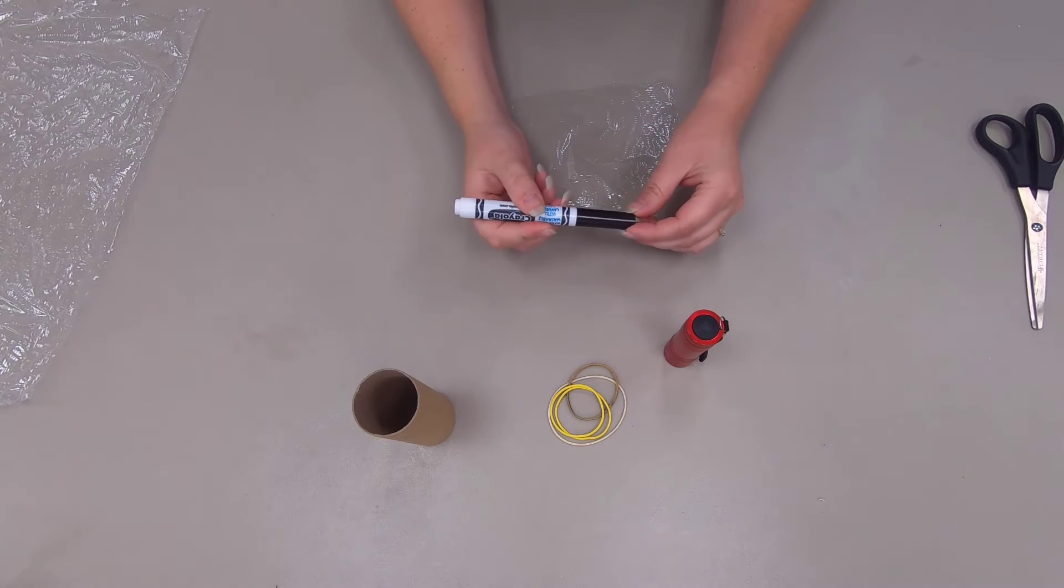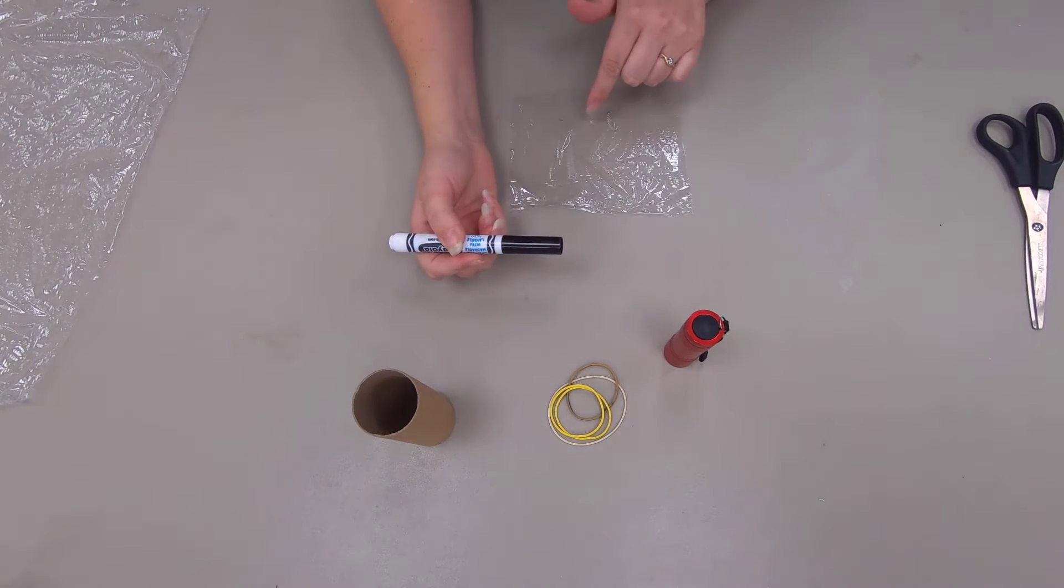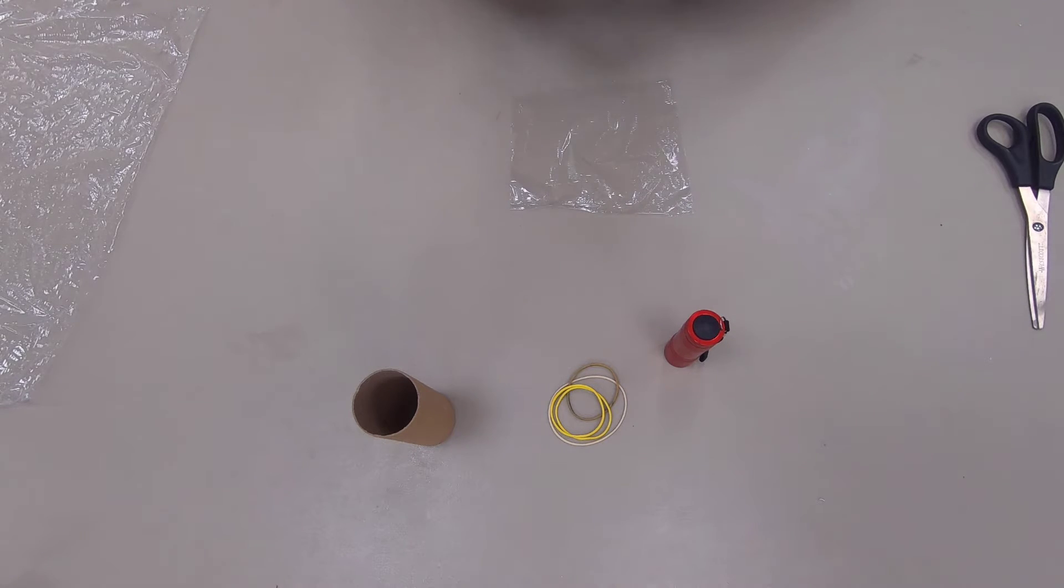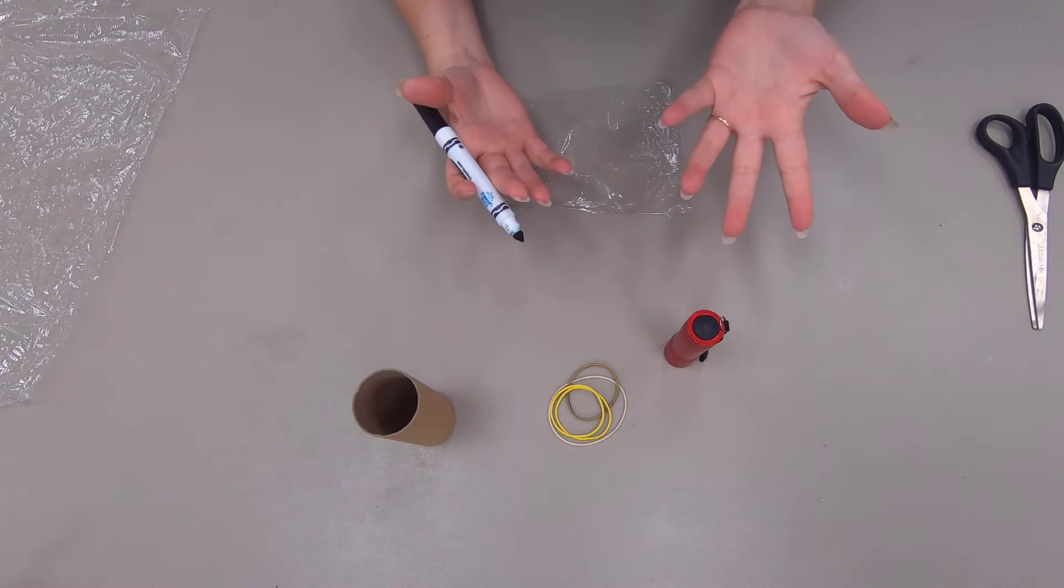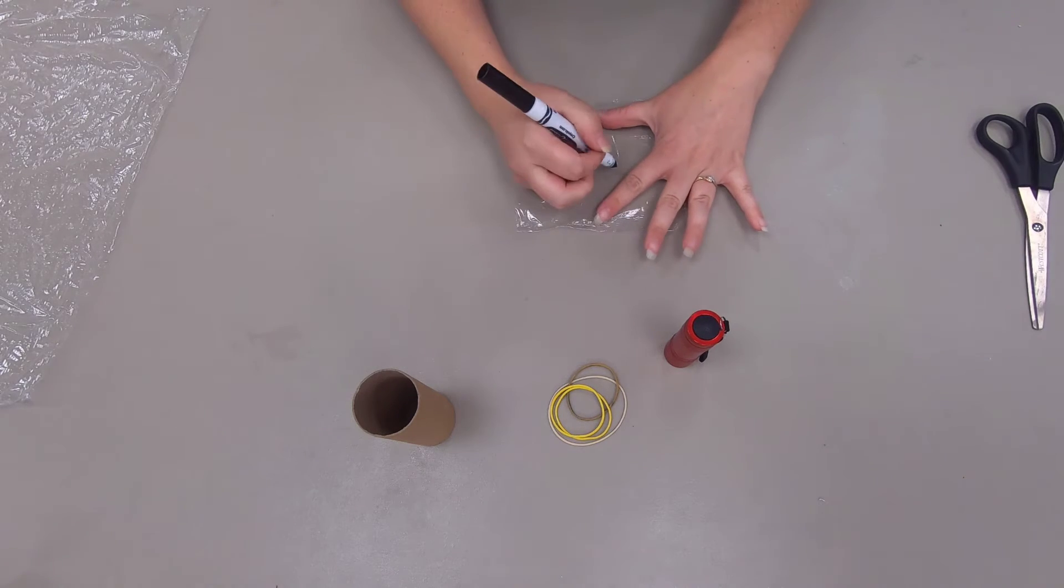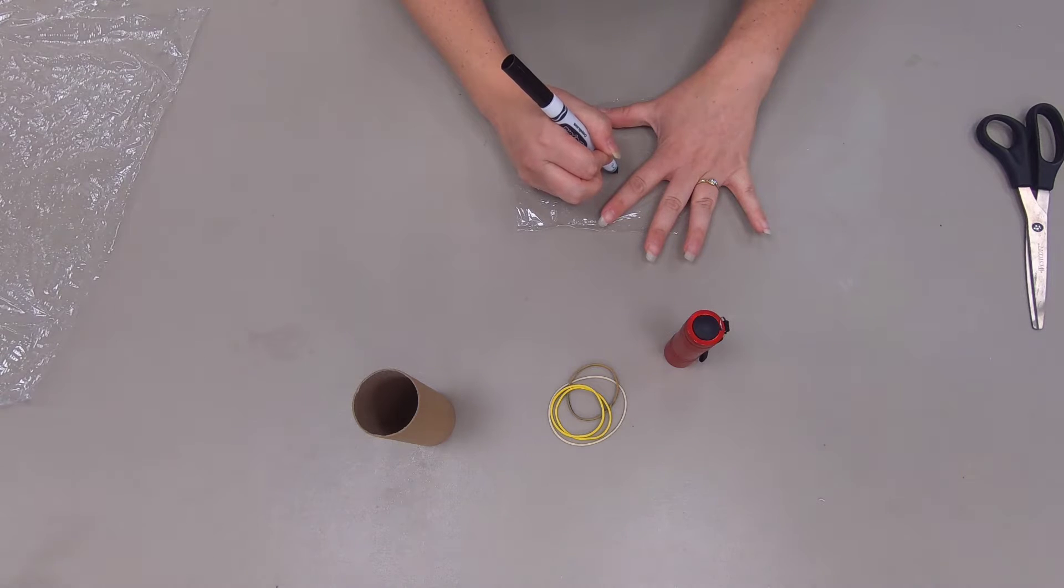I'm going to take my black marker and I'm going to make a little design in there. You can use any color marker, but for our experiment it's going to come out black on the wall anyway. We're going to be dealing with shadows, so I'm going to make little star points.